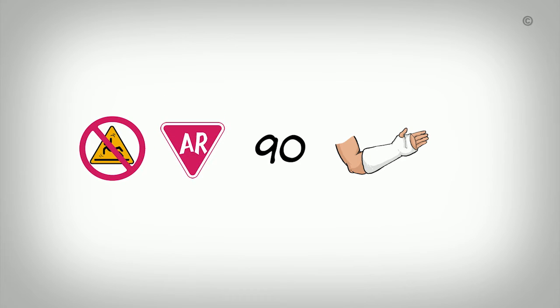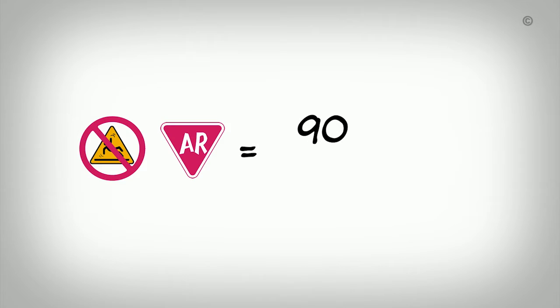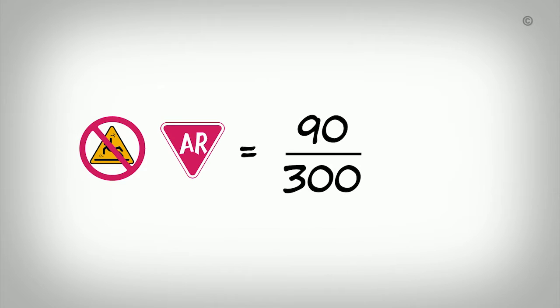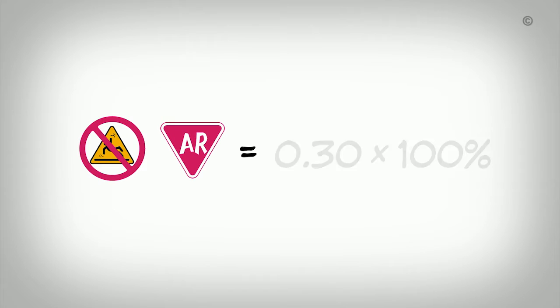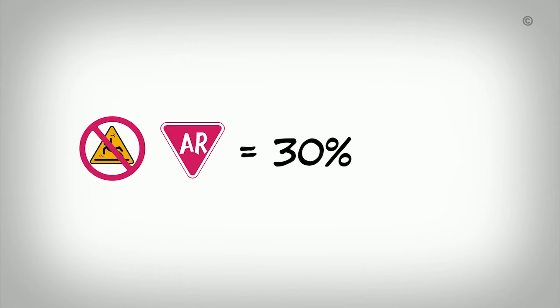The absolute risk for a fracture in the control group is calculated by dividing 90 by 300, which equals 0.30. We can show this as a percentage by multiplying by 100, giving us an absolute risk of 30% among those in the control group. We can also say that the baseline risk for a fracture among those in the control group is 30%, because the absolute risk is equivalent to baseline risk for those not exposed to an intervention.